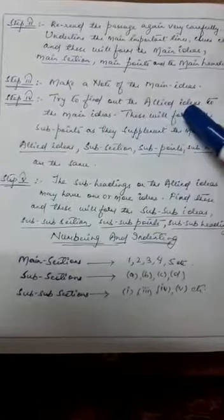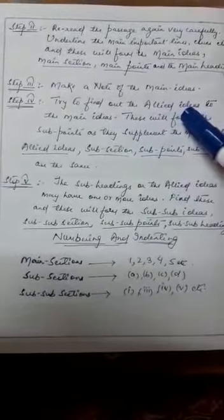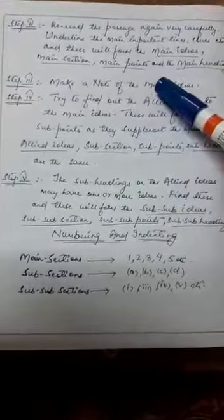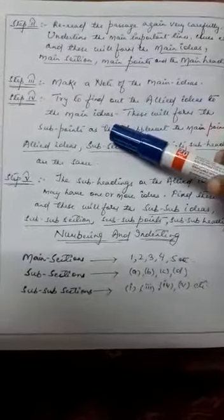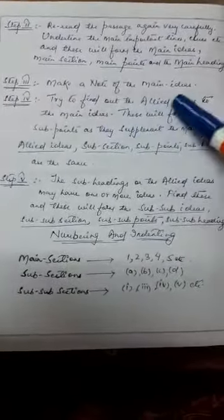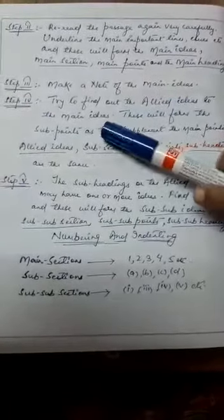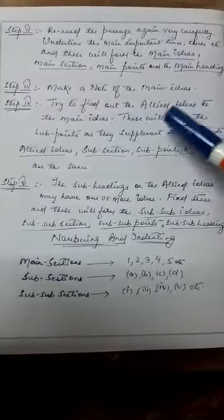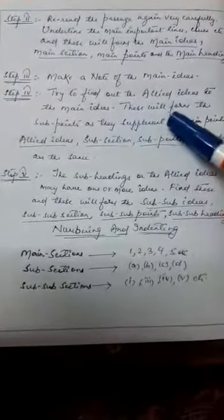Step three was make a note of the main ideas. Step four was try to find out the allied ideas. Allied ideas is nothing but below main ideas you write the sub ideas, the subsections. These are known as allied ideas.